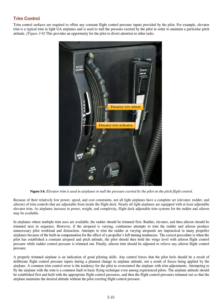The correct procedure is when the pilot has established a constant airspeed and pitch attitude. The pilot should then hold the wings level with aileron flight control pressure while rudder control pressure is trimmed down. Finally, aileron trim should be adjusted to relieve any aileron flight control pressure. A properly trimmed airplane is an indication of good piloting skills. Any control forces that the pilot feels should be a result of deliberate flight control pressure inputs during a planned change in airplane attitude, not a result of forces being applied by the airplane. A common trim control error is the tendency to over-control the airplane with trim adjustments. The airplane attitude should be established first and held with the appropriate flight control pressures, and then the flight control pressure is trimmed out so that the airplane maintains the desired attitude without the pilot exerting flight control pressure.